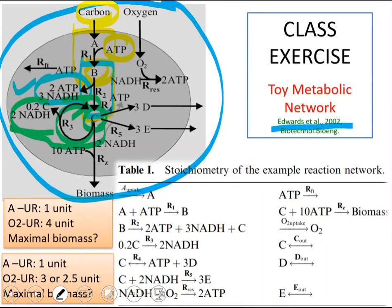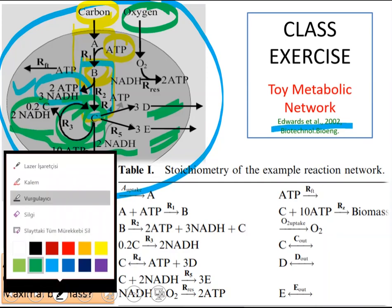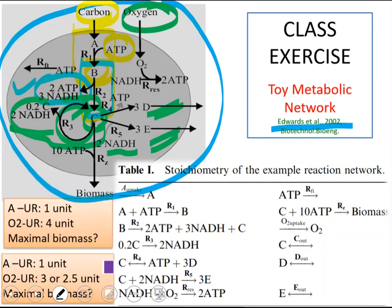So there are two alternatives. If there is no oxygen, if there is no oxygen available, C will be converted to some products. Here you see NADH. So the extra NADH produced in glycolysis will be balanced by the consumption, by its consumption here in the production of E. So fermentative pathway.